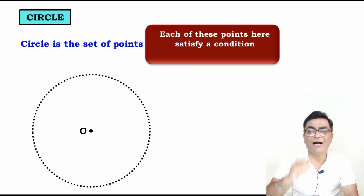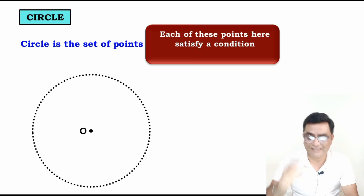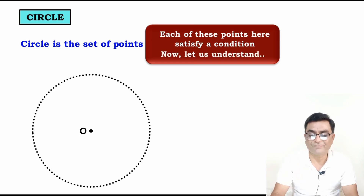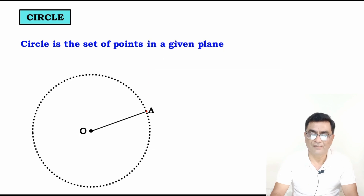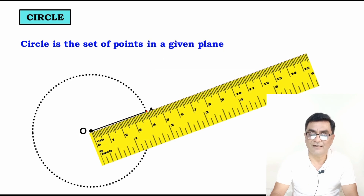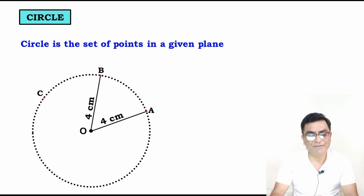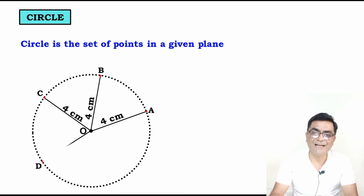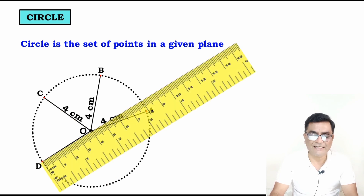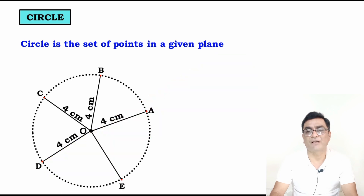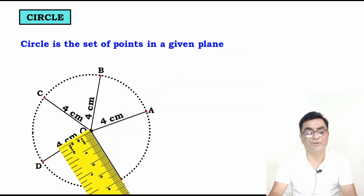Because each of these points must satisfy a condition — every point must fulfill the same condition. Points A, B, C, D, and E are all at 4 cm from center O. OA = OB = OC = OD = OE. All segments are equal.